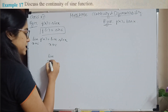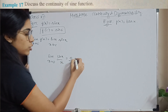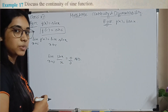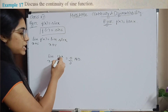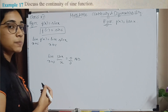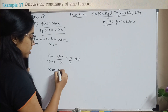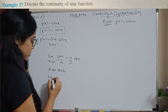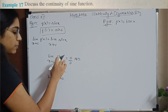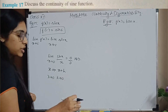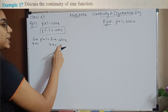The limit as X tends to 0 of sin X divided by X gives 0/0, which is not defined — you learned this in your limits and derivatives chapter. So it is always better to approach this differently. You can take X to be C plus H, so that when X tends to C, H also tends to 0.